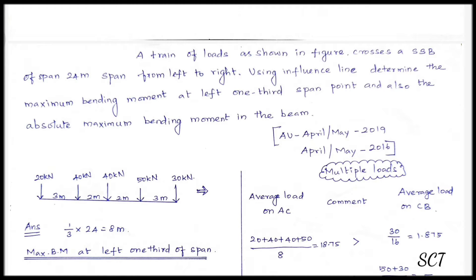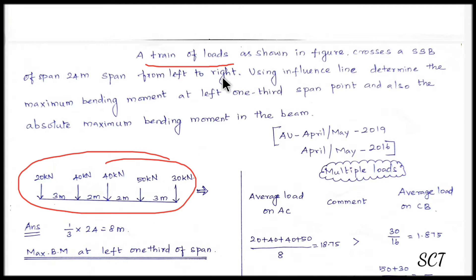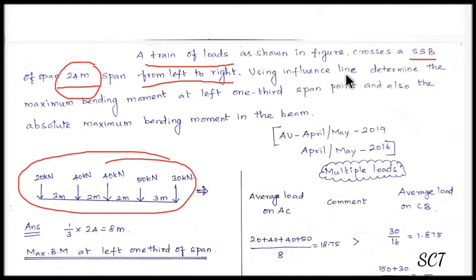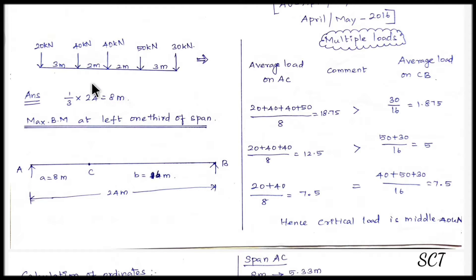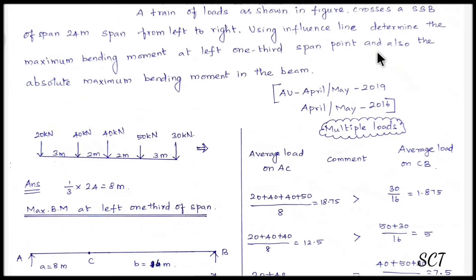Let's look at the train of wheel loads as shown in the figure. A train of wheel loads crosses a simply supported beam of 24m span from left to right. Using influence lines, determine the maximum bending moment at the left one-third of the span. One-third of 24m is 8m, so the left length is 8m. Also determine the absolute maximum bending moment in the beam.